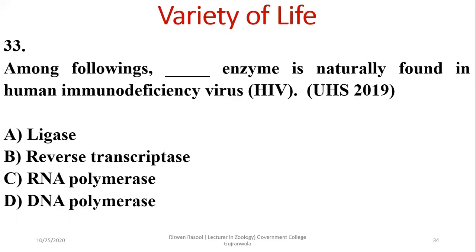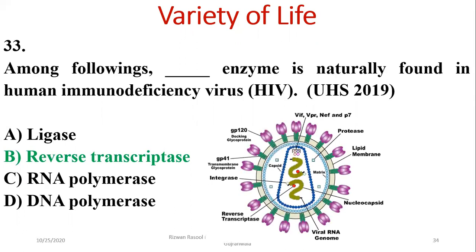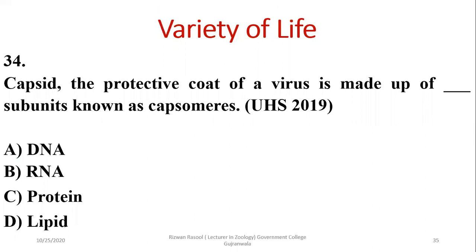Question 34: Among the following, which enzyme is naturally found in human immunodeficiency virus (HIV)? HIV has reverse transcriptase as its natural enzyme, involved in the reverse transcription process.